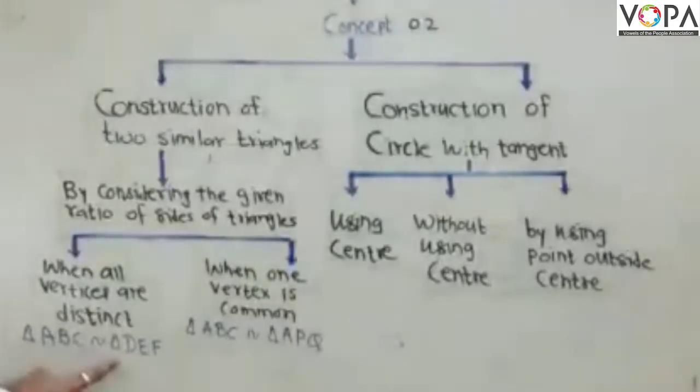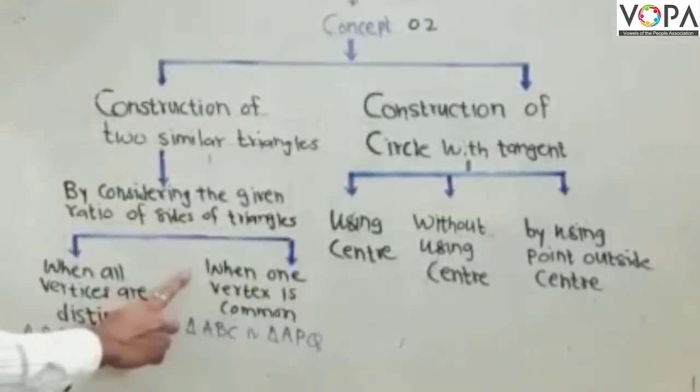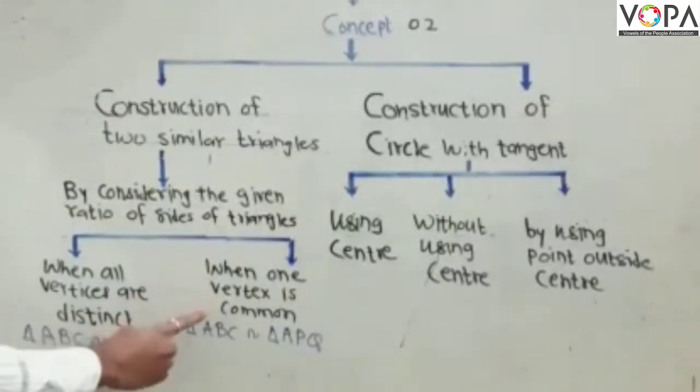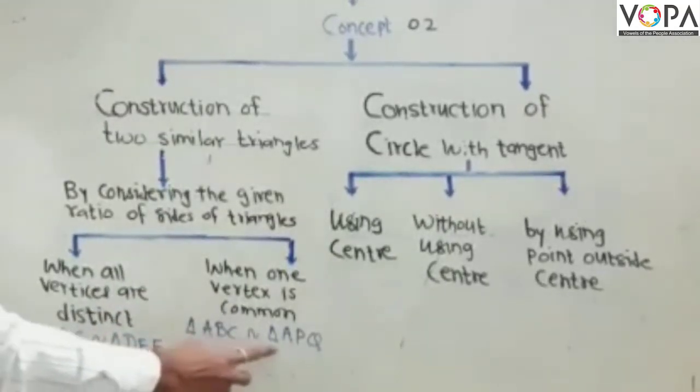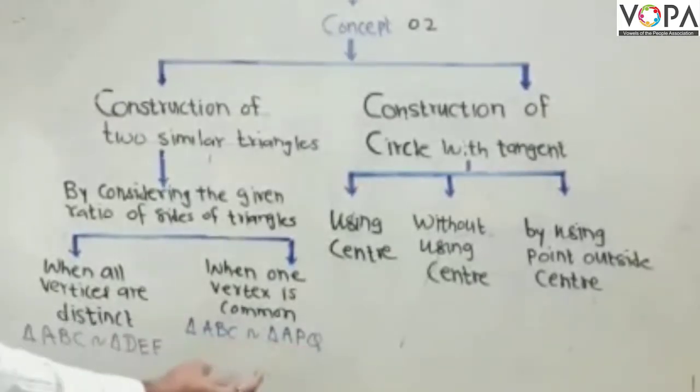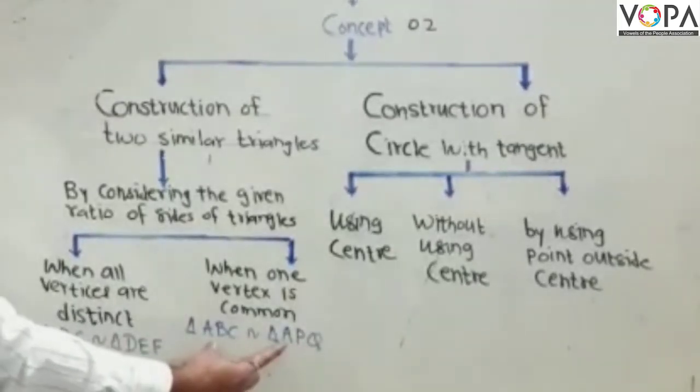In second condition, when one vertex is common. We take example triangle ABC, similar triangle A prime B prime C prime. As we observe, here angle vertex A is common.